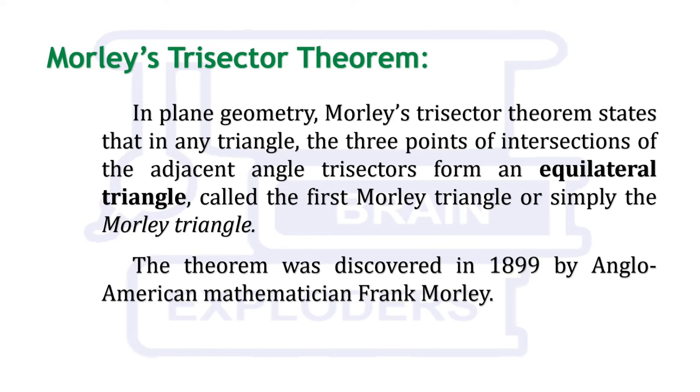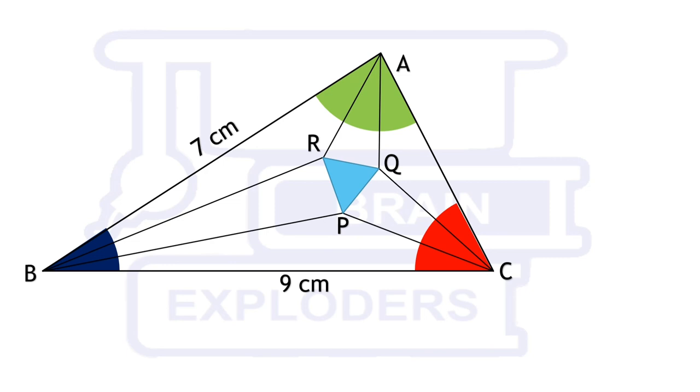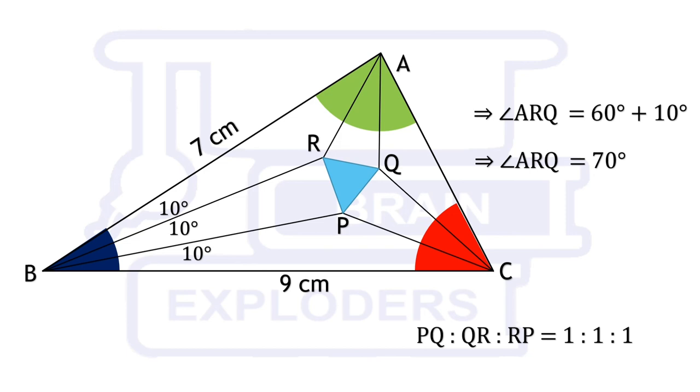For the particular triangle given in the problem, angle ARQ equals 60 plus 10, that is 70 degrees, and PQR is an equilateral triangle so the required ratio is 1 is to 1 is to 1. Let's move to our another question.